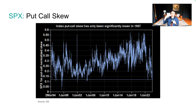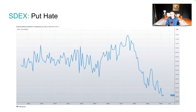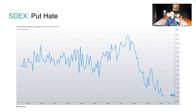There's demand for upside calls and also supply of puts. People in this environment do not believe the market is going to go down — it's a real theme. Put selling was something we saw a lot of in 2022. The SDEX, which measures the value of a one-standard-deviation SPDR put one month out in time, is at all-time lows. People are not looking to get long protection, or the value of that protection is very low.